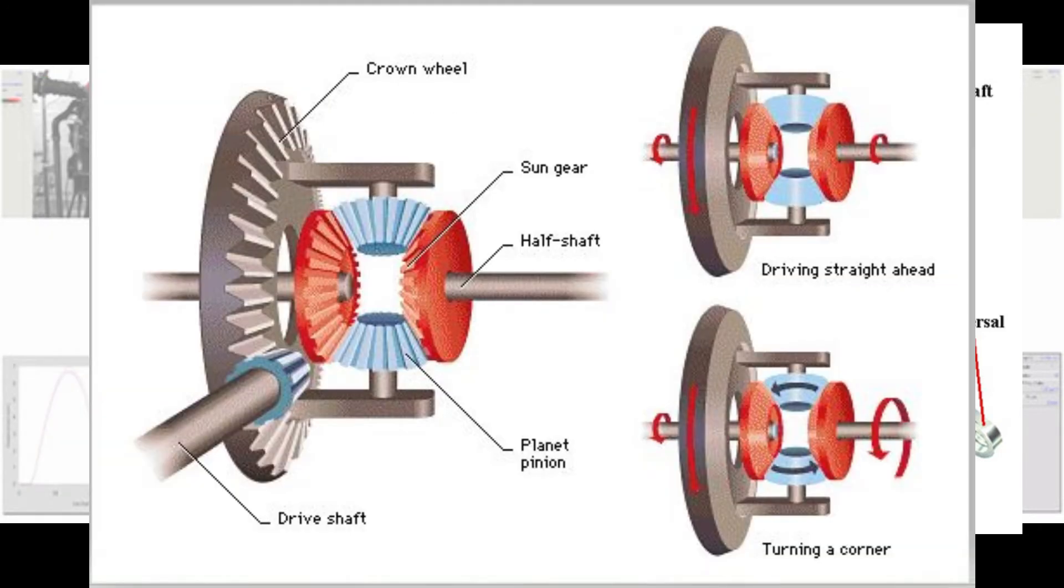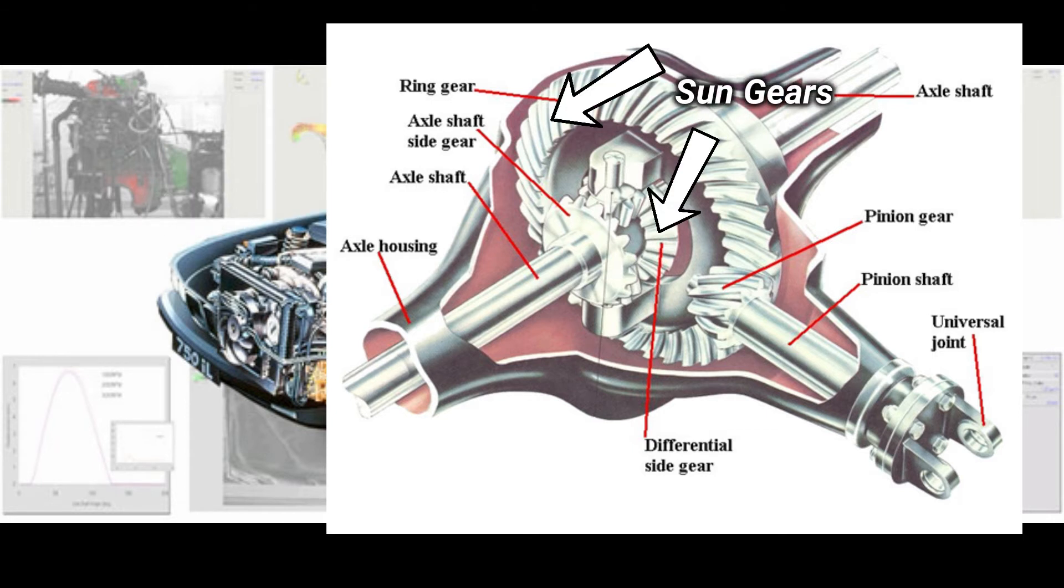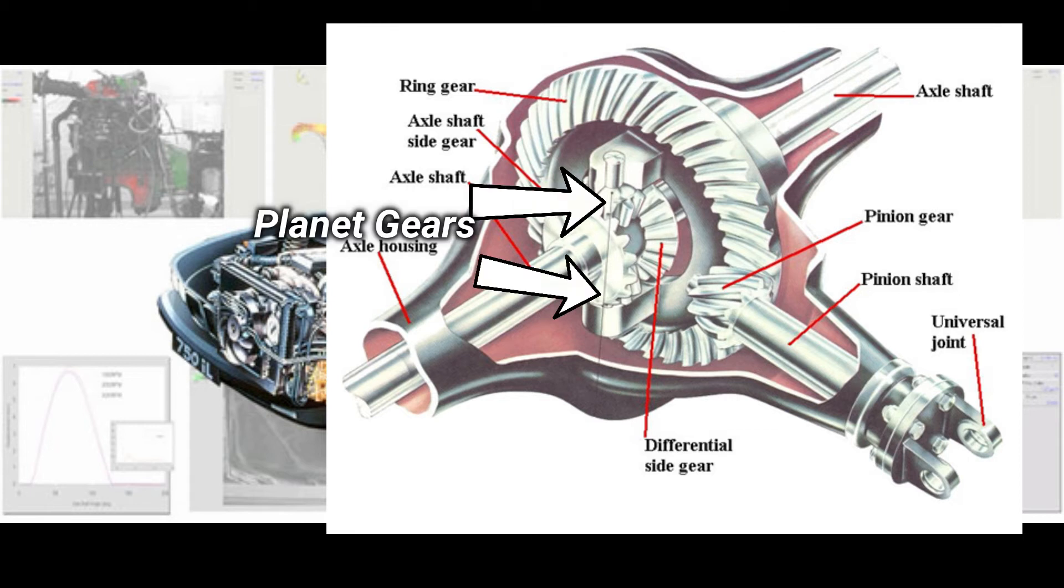In the differential, bevel pinion gear is fixed to the propeller shaft which rotates the crown wheel. The crown wheel has another unit called the differential unit. It consists of two bevel gears that is sun gears and two bevel gears that is planet gears.